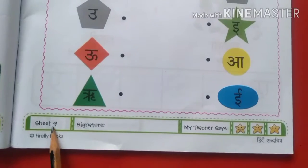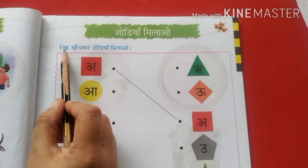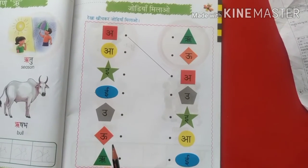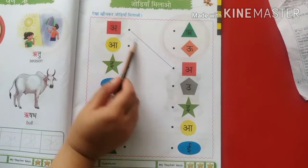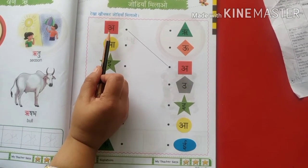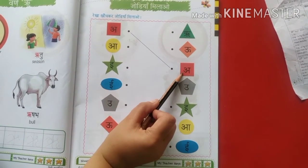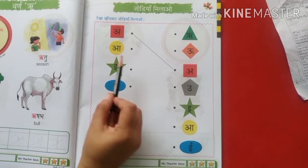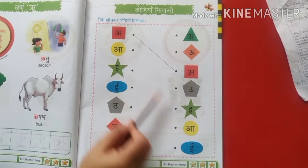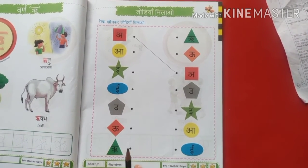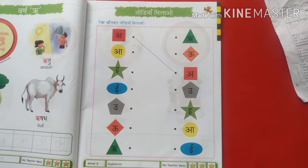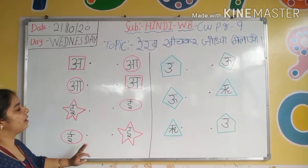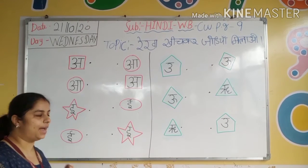Open page number 9. Jodiya milao — rekha khich kar jodiya milao. Hame yaap pey letter diye goye hai, hame unko rekha khich kar jodiya milao lani hai. Jiaise ki a se anaar — toh hum ne iis ko a se match kiya, rekha khich kar milao. Now kids, look at the board and write with me. Hame kya karna hai? Rekha khich kar jodiya ko milao.